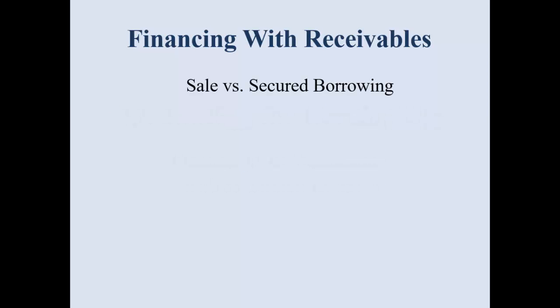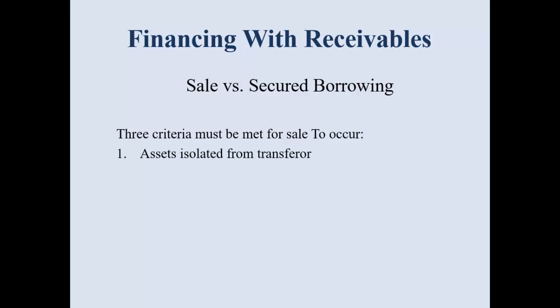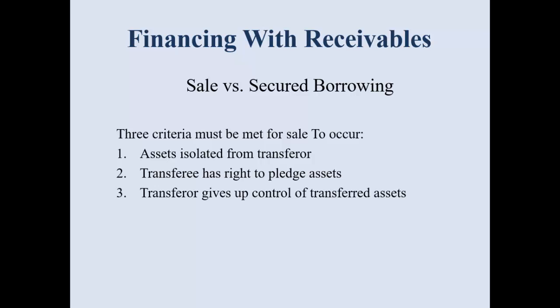When financing with receivables, the first thing the accountant must determine when analyzing their source document is: was it a sale, or was it just secured borrowing? In order to be classified as a sale, three criteria must be met: the assets must be isolated, the transferee has the right to pledge the asset, and the transferor has given up control.